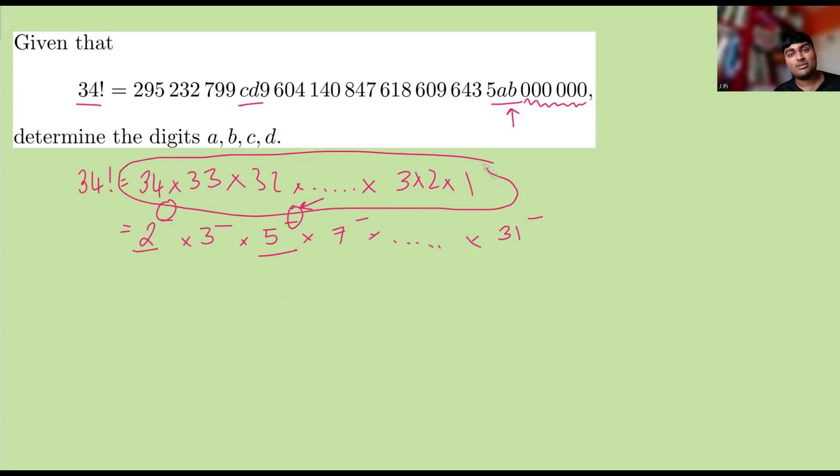multiples of 5 occur a lot less frequently than multiples of 2 do. You get a multiple of 2 every other number, but a multiple of 5, you only get every fifth number. Okay, well, how many multiples of 5 are there here?